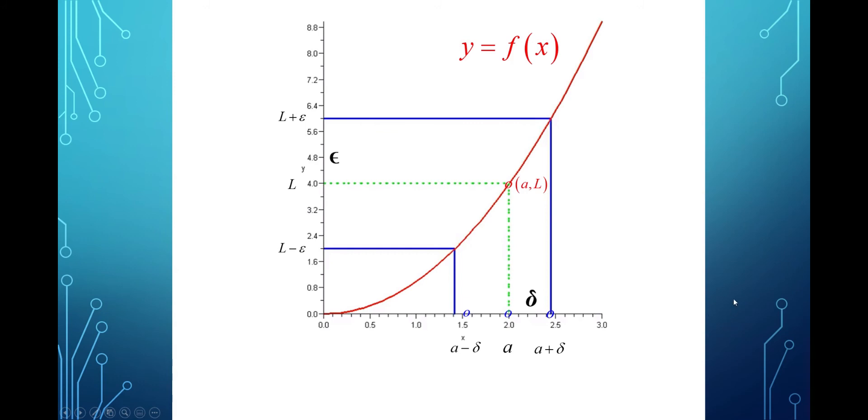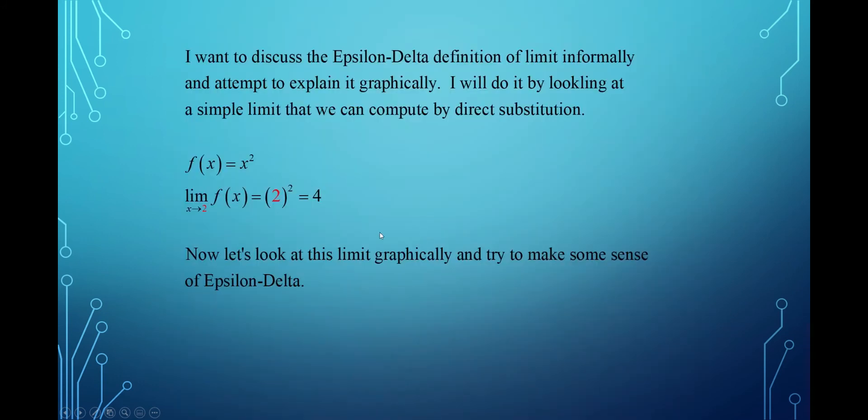And in this particular case, I was actually picturing f(x) equals x squared and the limit is x approaches 2, which for this function you could get that limit by what's called direct substitution. Just put your 2 in there for x. Square it, you get 4.